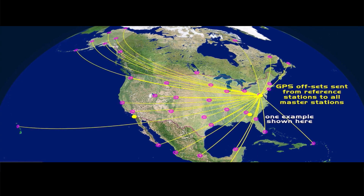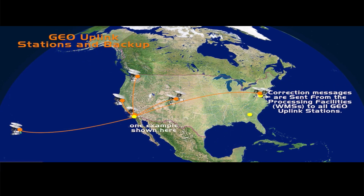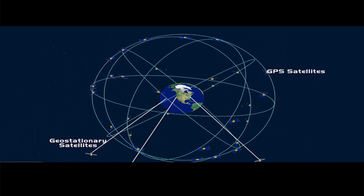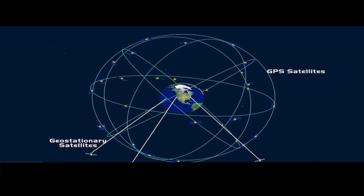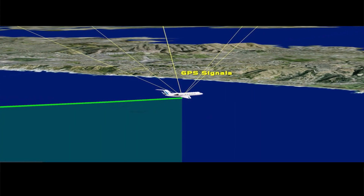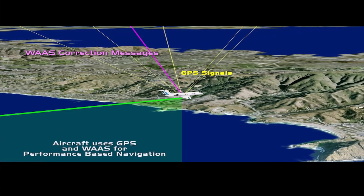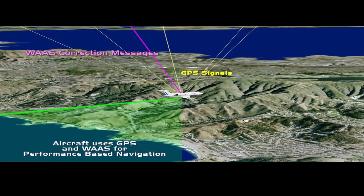Next, the correction messages are sent to uplink stations across the area of coverage. The uplink stations then uplink those correction messages to geo satellites, for them to further broadcast to airplanes equipped with SBAS, such as WAAS, EGNOS, etc., to improve the accuracy and integrity of the GNSS, thus facilitating and making it possible for airplanes to fly RNP approaches like LPV, or even fly in congested areas where PBN is required.